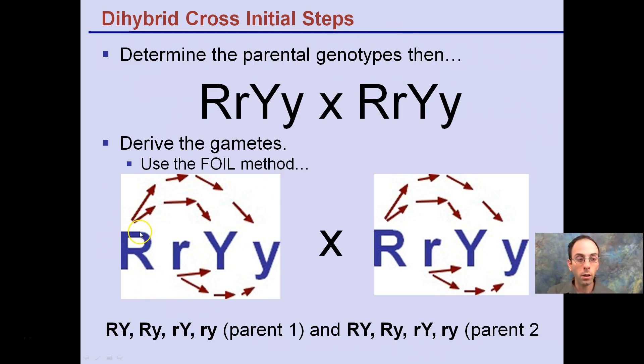Notice that parent 1 has big R. We go through and we cross it with big Y, so see our big R and our big Y. The big R also gets distributed though to our little y, so big R, little y.